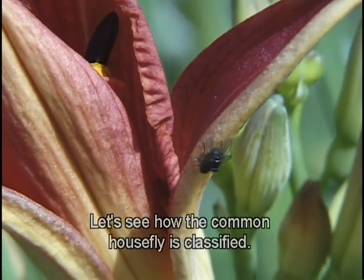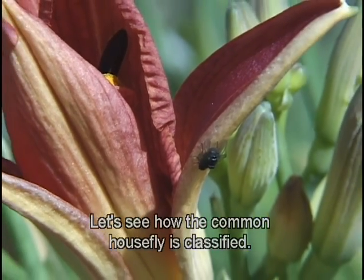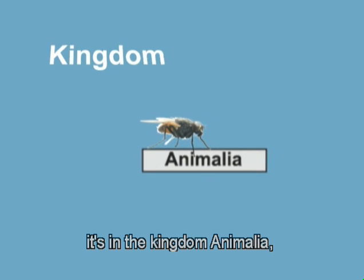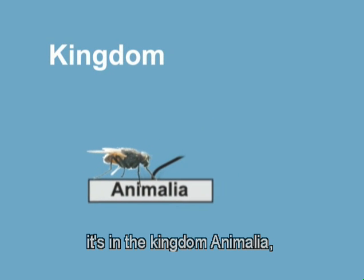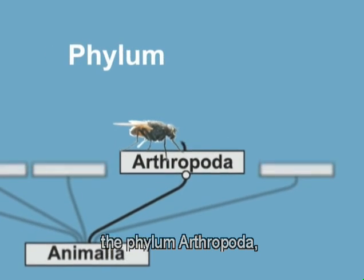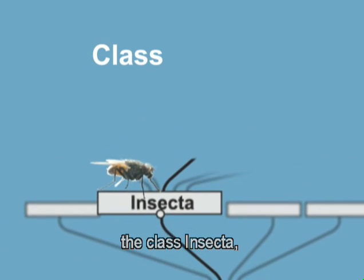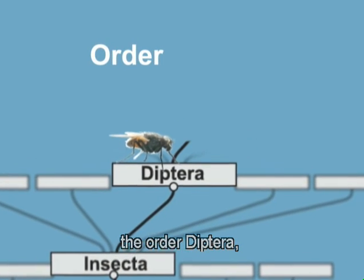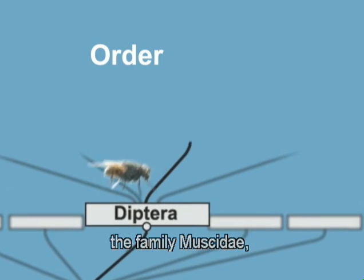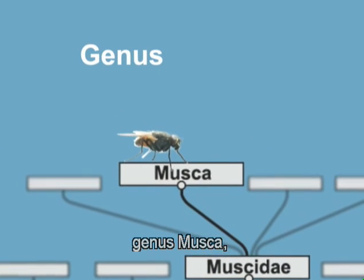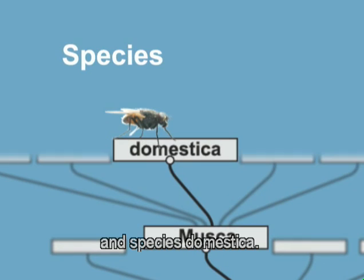Let's see how the common housefly is classified. Going from broad to specific, it's in the kingdom Animalia, the phylum Arthropoda, the class Insecta, the order Diptera, the family Muscidae, genus Musca, and species Domestica.